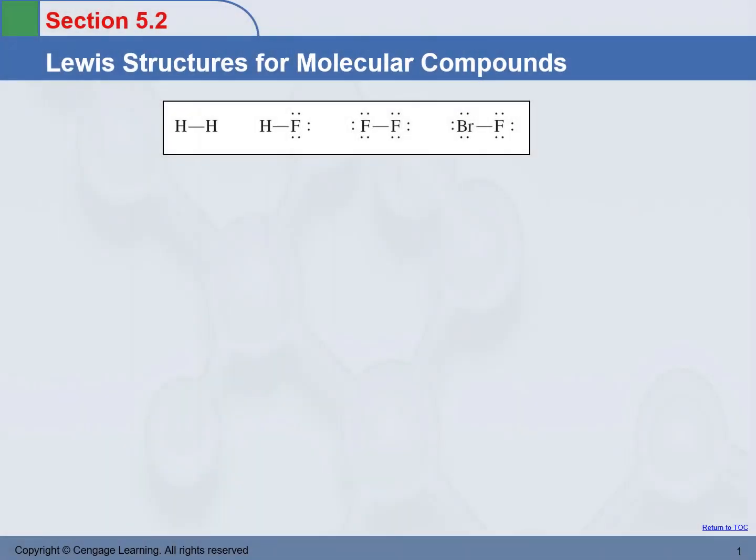We went through the formation of a covalent bond by using hydrogen as an example, and that was the Lewis structure we eventually came up with in the last lecture.